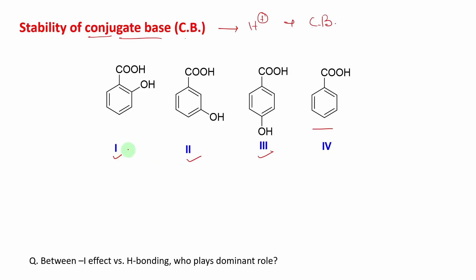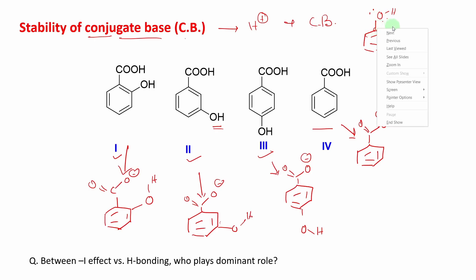In order to understand this, let's first draw the conjugate base of all four structures. Now students, I have drawn all four conjugate bases. Here an interesting question may come in your mind: sir, what kind of effect does this OH group actually exert? Students, this OH group exerts two types of effect: one is called minus I effect.